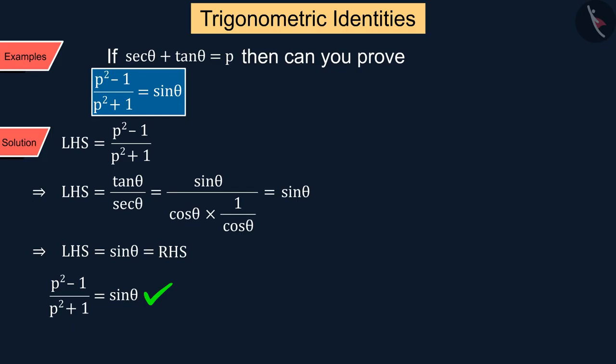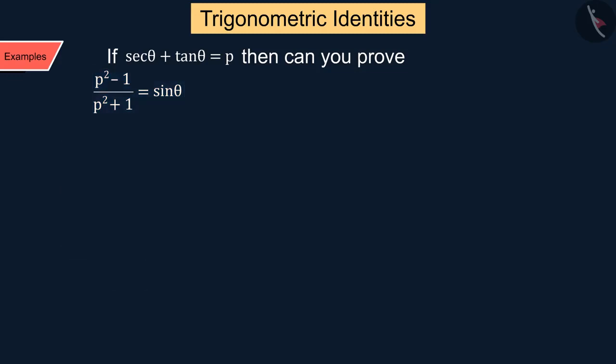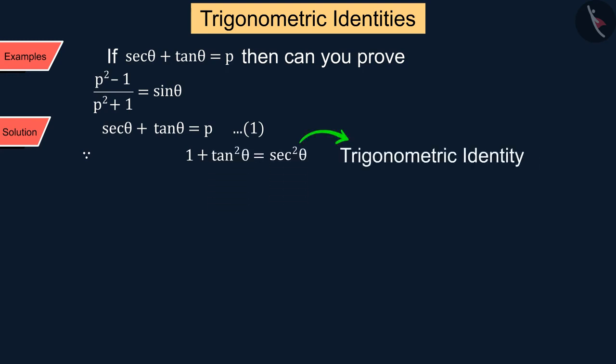No, we can solve it in other ways also. Let's see. Given that sec θ + tan θ equals p, which is represented by equation 1. And we know that 1 + tan²θ = sec²θ, which we solve by keeping the square of sec θ minus the square of tan θ as 1.